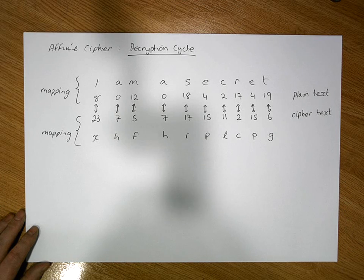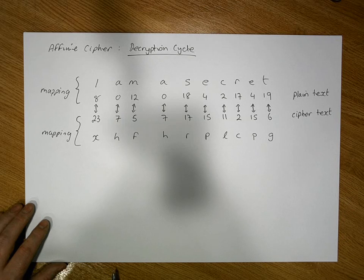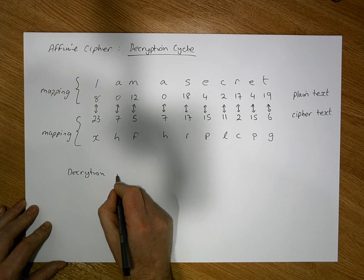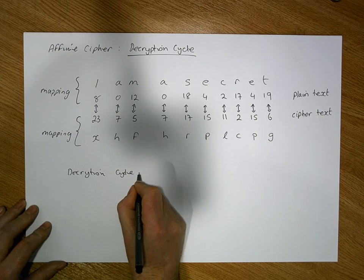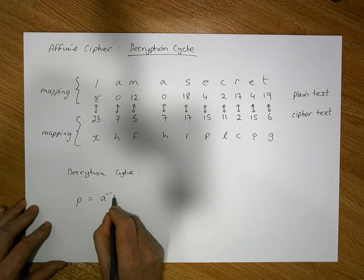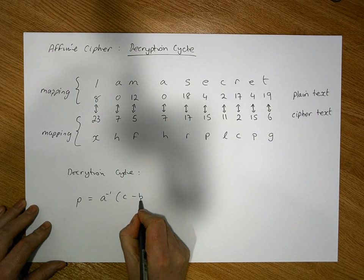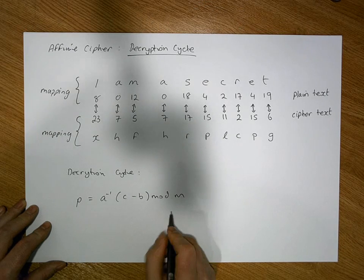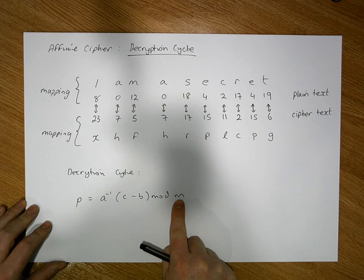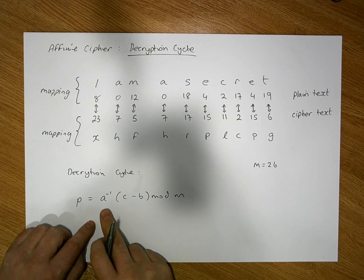As defined in the previous video, there's a formula for undertaking this procedure. The decryption cycle relies on a particular formula that says the plain text you're going to recover is equal to a-inverse times the cipher text in numerical form, minus b, modulo m — where m is the size of the alphabet. In this case, the English alphabet has 26 letters, so m is equal to 26.